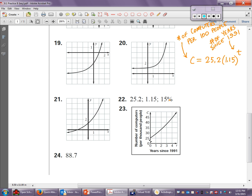What is the number of computers per 100 people in 1991? Can you see it from this equation? What would T be? The number of years since 1991. If we're in 1991, it would be zero. So what would happen if you put zero in here for T? You'd get a C value. That would be the number of computers for 100 people in 1991. What would you get if you plugged zero in? You'd get one here, but then you'd multiply by 25.2.